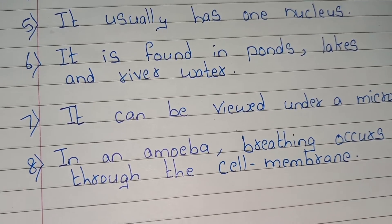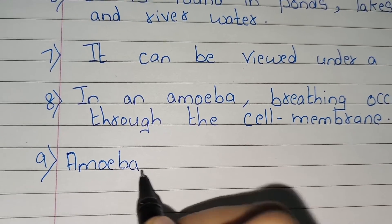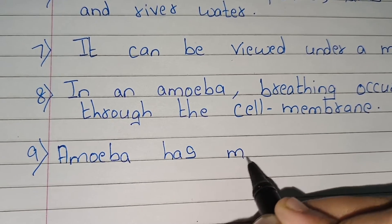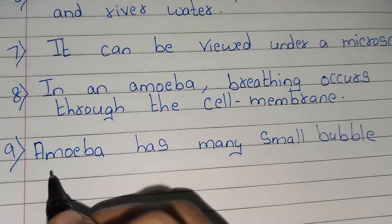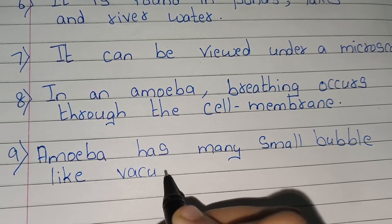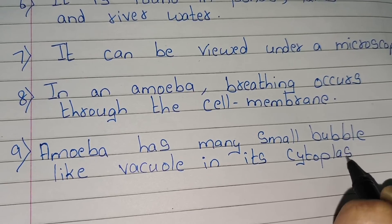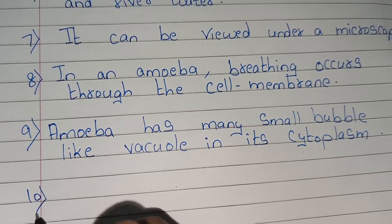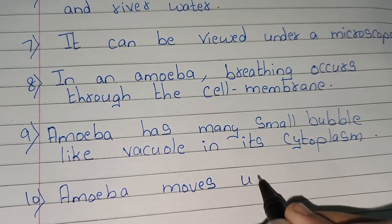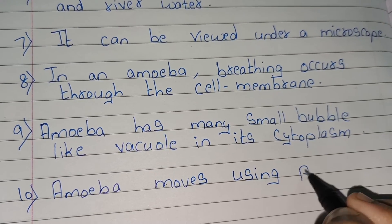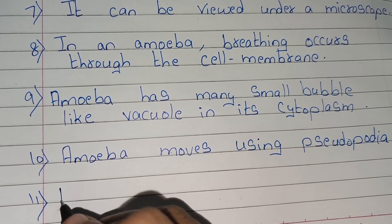Point number nine, amoeba has many small bubble-like vacuoles in its cytoplasm. Point number ten, amoeba moves using pseudopodia — the P is silent, so it's called pseudopodia.